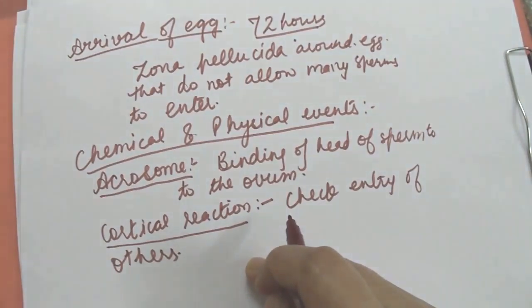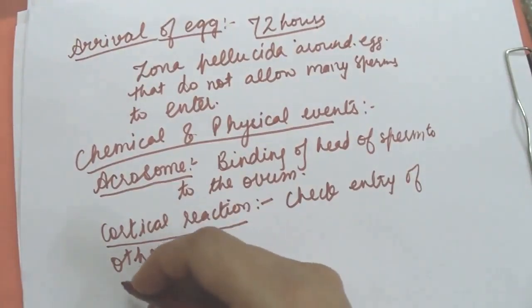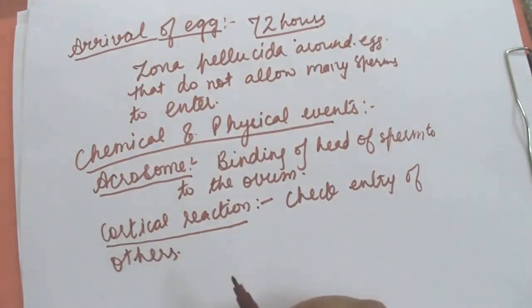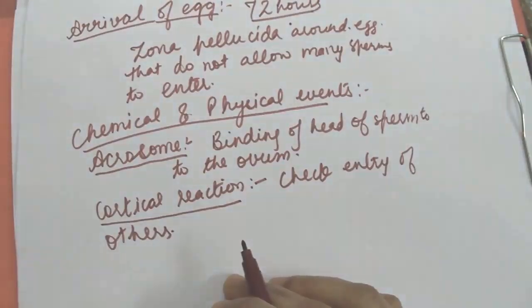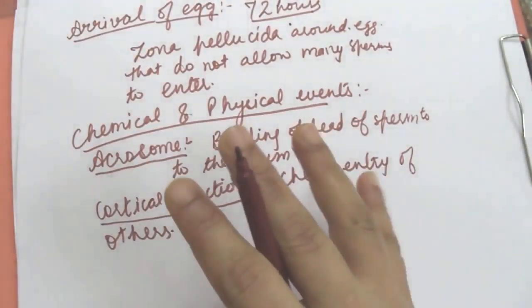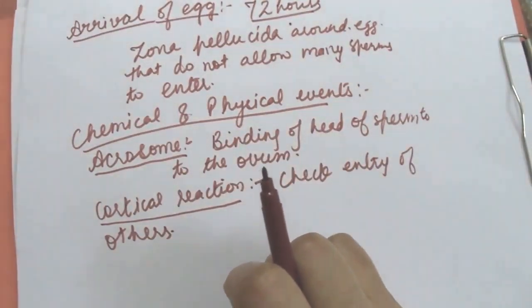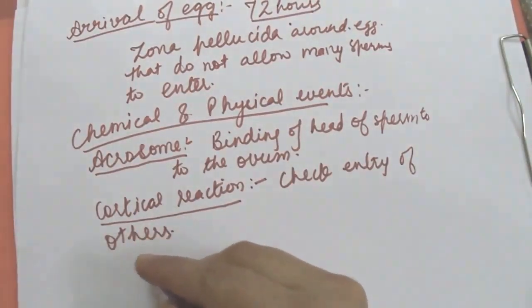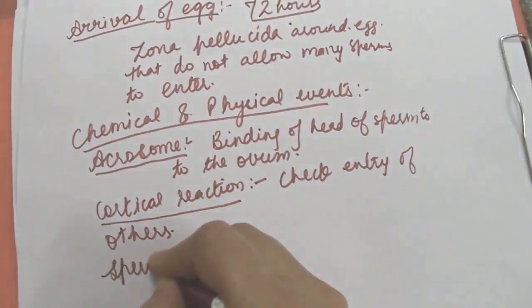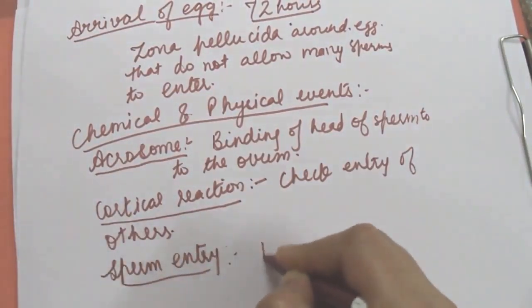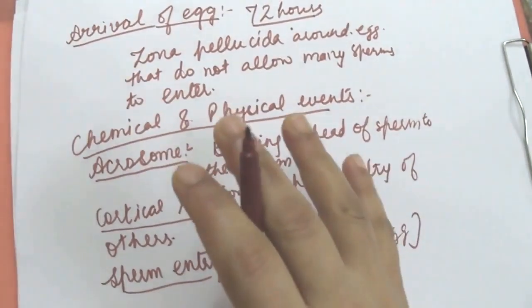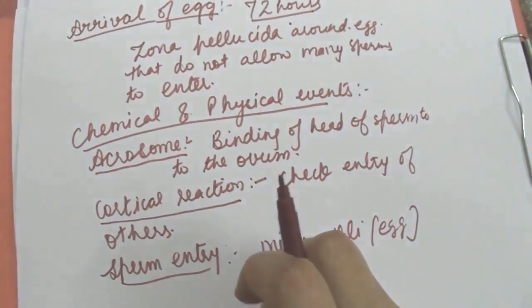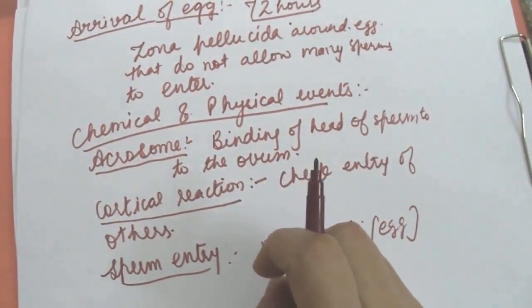Next is sperm entry. First is the acrosome reaction, then the cortical reaction, and the last is the sperm entry. Now what is the sperm entry? The egg surrounds the entering sperm with finger-like projections called microvilli which constitutes fertilization cone. The egg engulfs the sperm from finger-like projections. What are the finger-like projections? The microvilli. Here we will show the sperm entry. Sperm enter with the help of microvilli that are formed by the egg itself. These microvilli help in moving the sperm inside the egg.